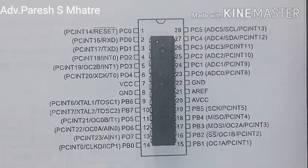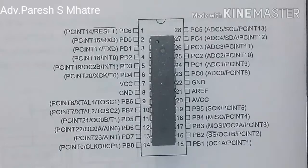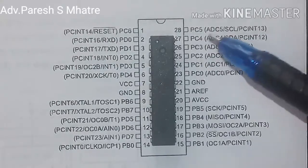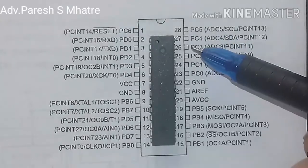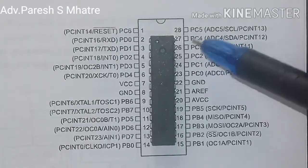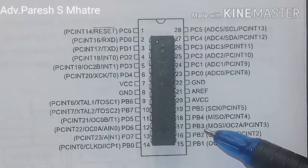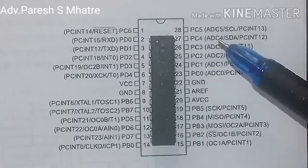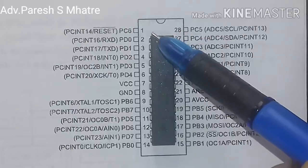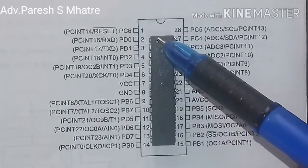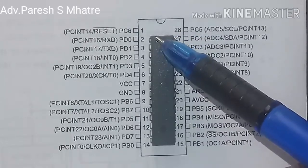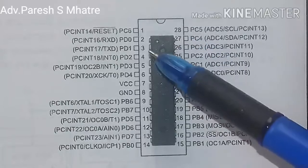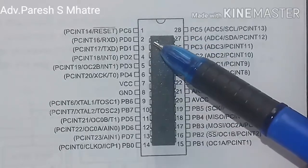In this video we are going to see the programming part of our digital clock. Hi guys, welcome again, myself Paresh Madre. This is the 28-pin AVR microcontroller we are using in our digital clock. This is the RISC architecture microcontroller, which is more advanced than the CISC, meaning complex instruction set computer.